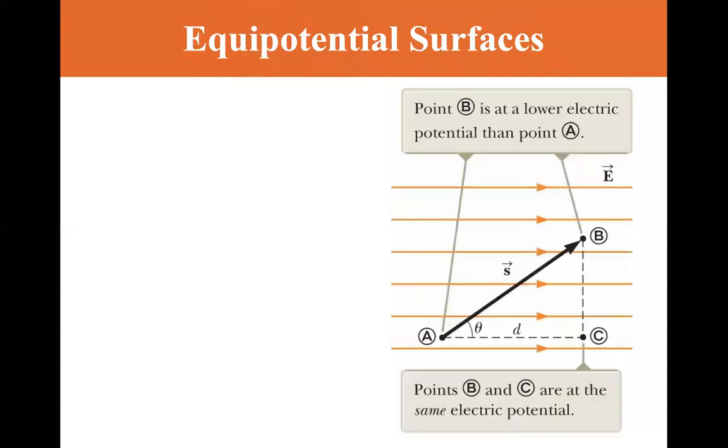Okay, equal potential surfaces. Point B is at a lower electric potential than point A. And points B and C are at the same electric potential. So B and C are at the same electric potential. They have a different path. So that's an indication that this is a conservative field. The electric field is a conservative field.